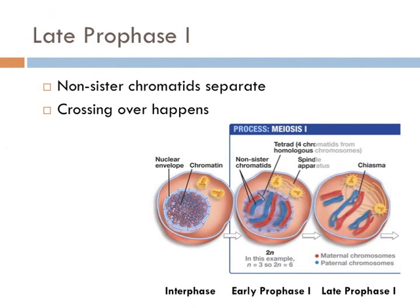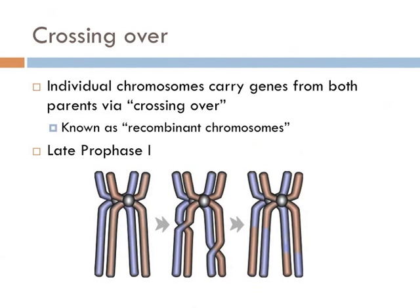During late prophase I, the non-sister chromatids begin to separate at several points along their length, but they stay joined at certain locations and look like they cross over one another. The points where the non-sister chromatids cross are called chiasmata. It is hypothesized that crossing over of non-sister chromosomes at chiasmata is when a physical exchange of paternal and maternal chromosomes occurs — the non-sister chromatids break and rejoin at each chiasma, producing chromatids that have both paternal and maternal segments.